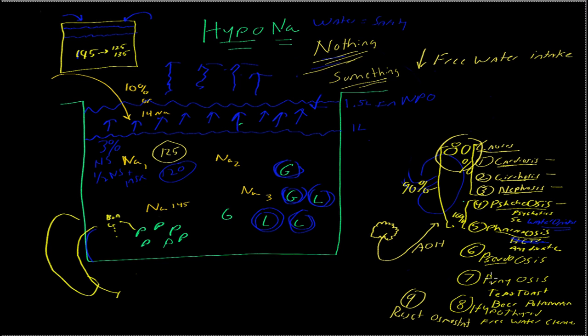The pseudo-hyponatremia, not a big problem usually. I do check, obviously check blood sugar. I do check to make sure to see what the protein level is in the bloodstream and the lipid level. If I think any idea that there's something not right here, I'll check that. Puniosis, tea and toast, beer. You've got to increase the amount of protein in the diet. Thyroid, obviously easy to treat. And then the reset osmostat, don't treat. Just let it go. So that's hyponatremia in a nutshell.